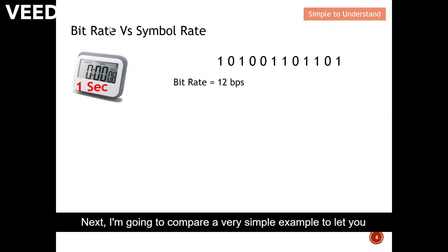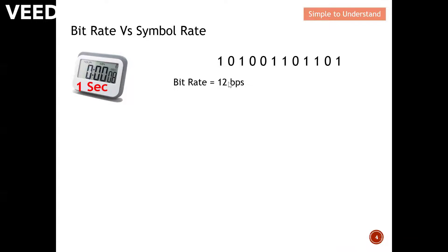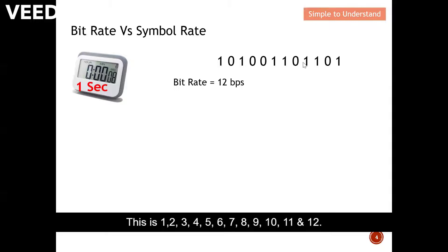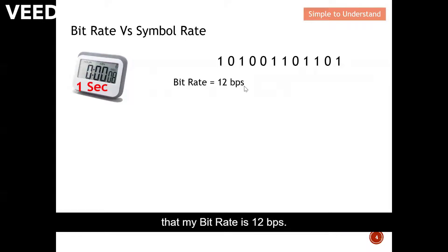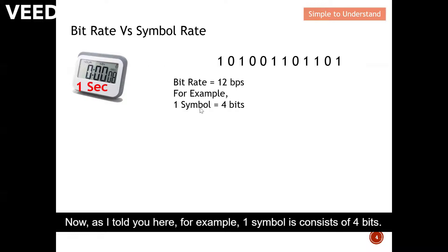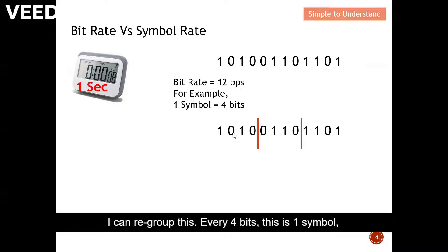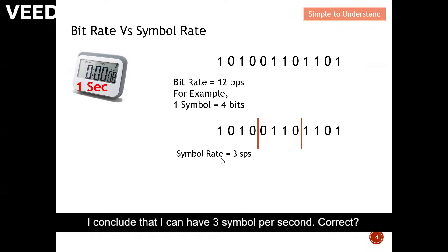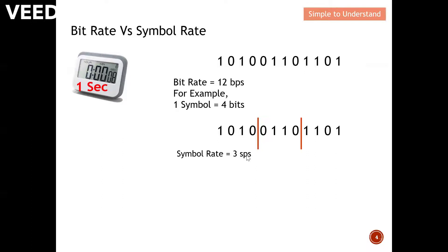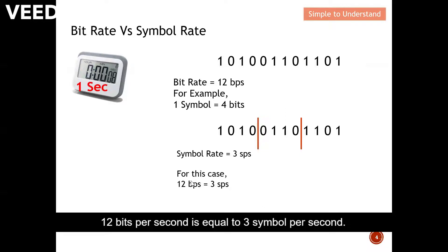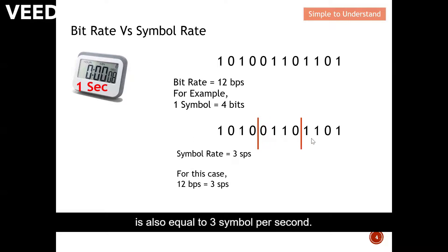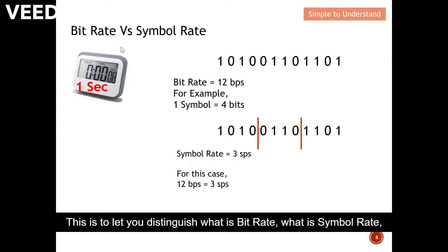Let me compare a simple example to illustrate bit rate versus symbol rate. In one second, I can send 12 bits of data — so my bit rate is 12 bits per second. Now if one symbol consists of four bits, I can regroup the bits: the first four bits are symbol one, the next four are symbol two, and the last four are symbol three. That gives me three symbols per second.